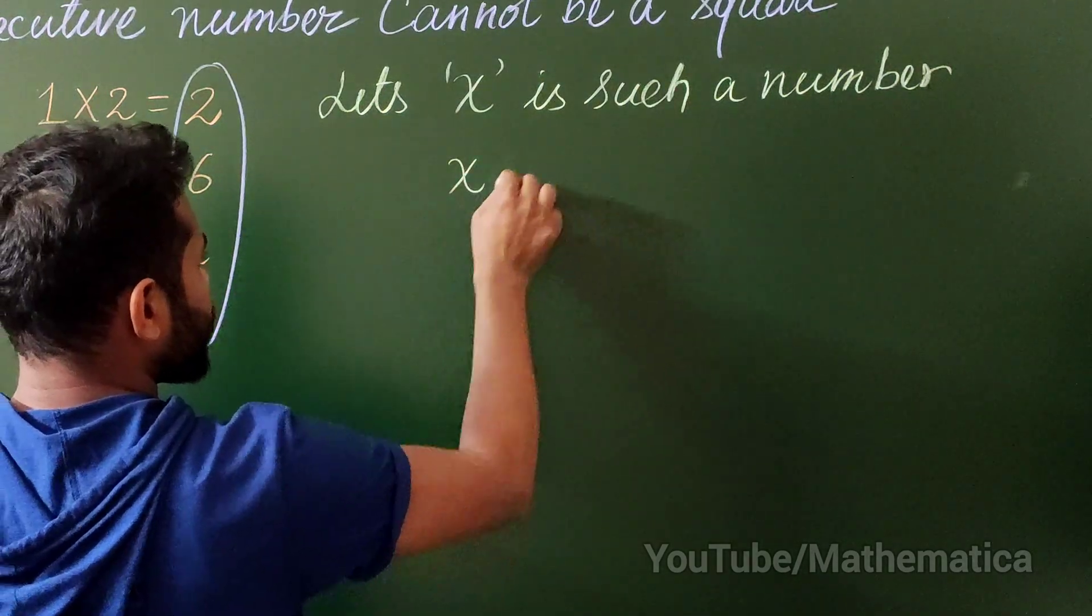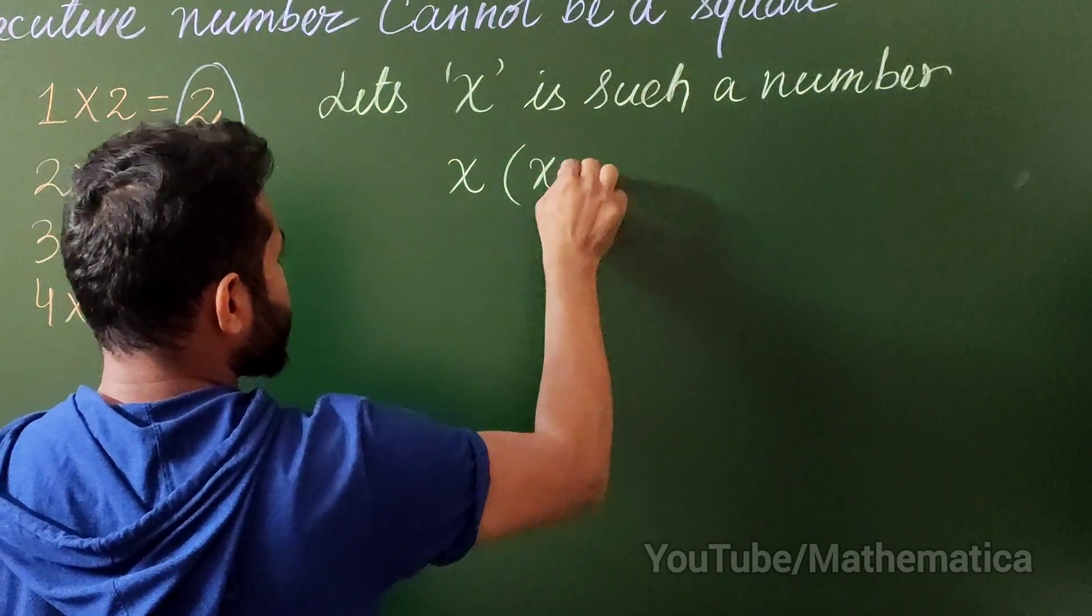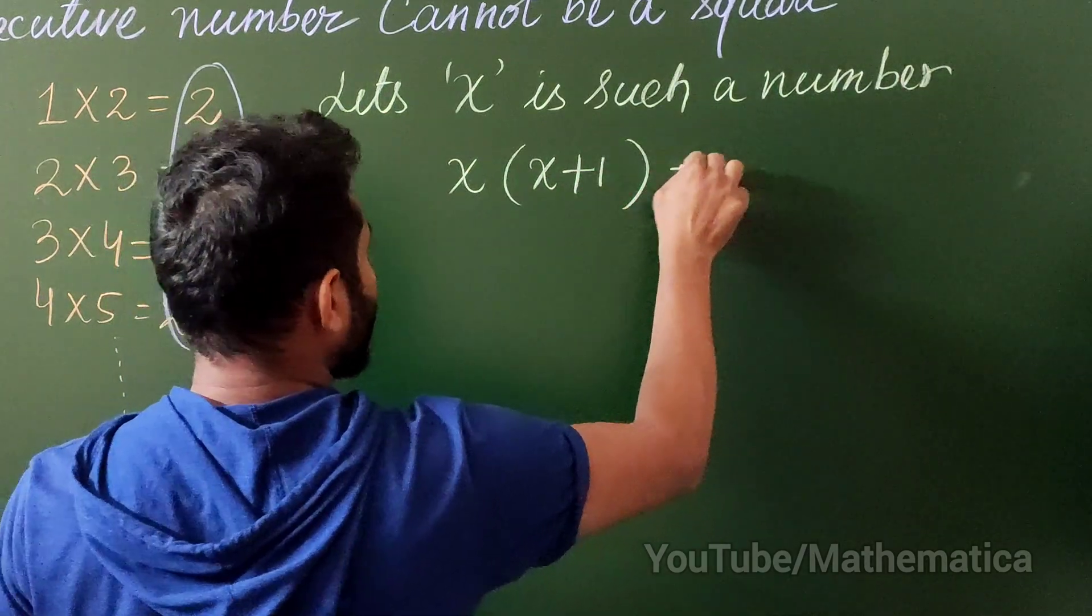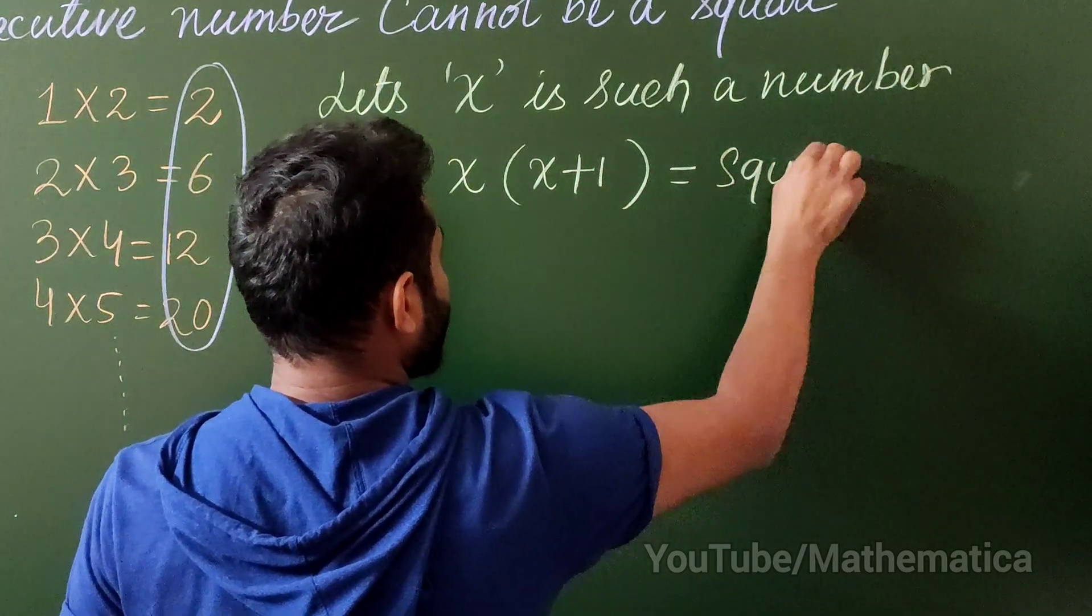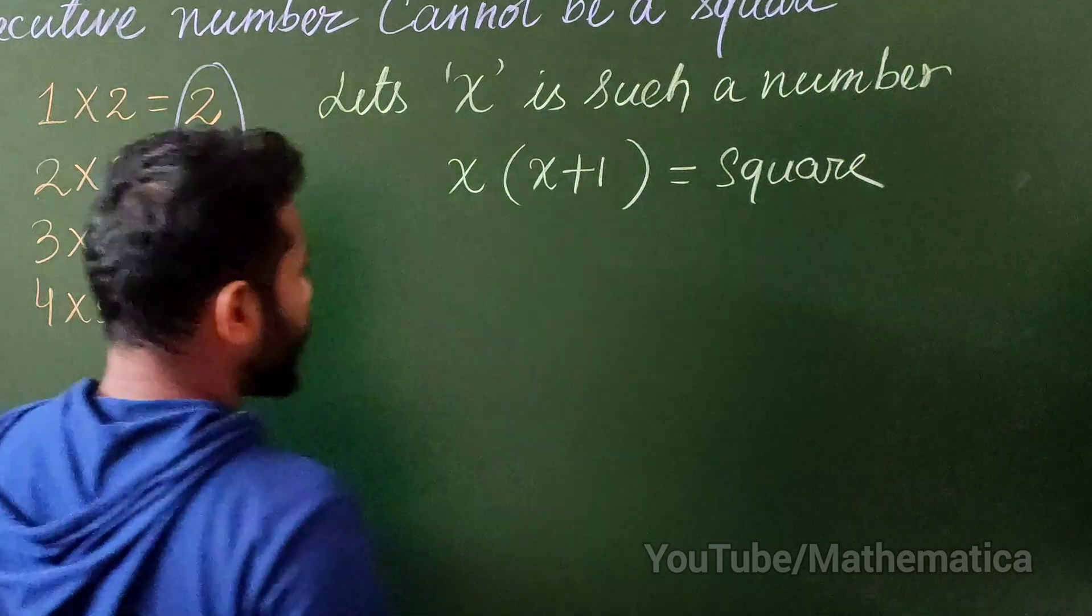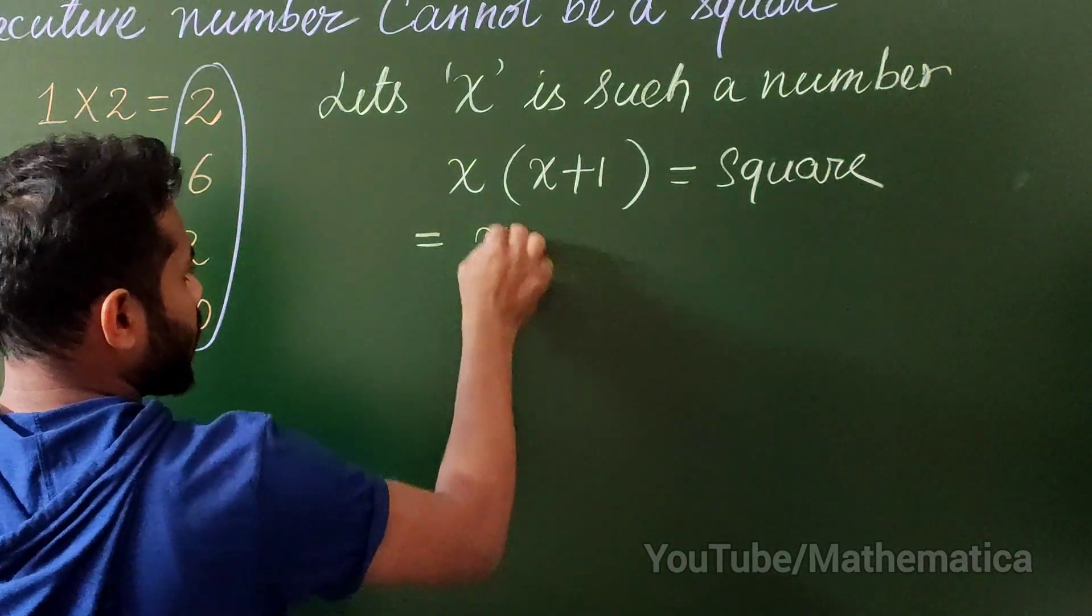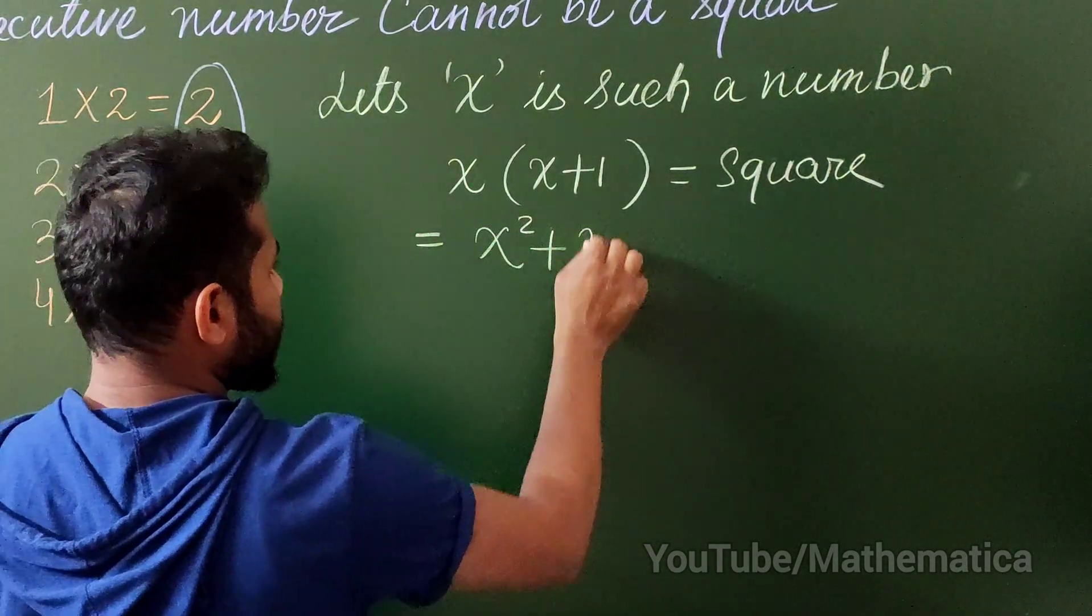So if I multiply x to x plus 1 results in a square. Why? This gives me x square plus x.